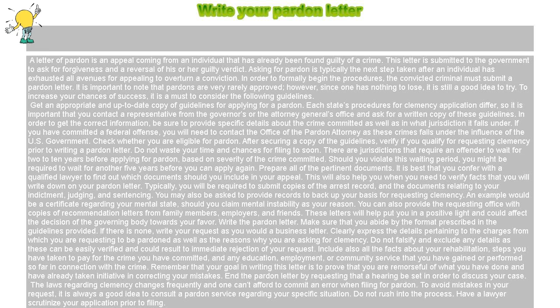Check whether you are eligible for pardon. After securing a copy of the guidelines, verify if you qualify for requesting clemency prior to writing a pardon letter. Do not waste your time and chances by filing too soon. There are jurisdictions that require an offender to wait for 2 to 10 years before applying for pardon, based on the severity of the crime committed. Should you violate this waiting period, you might be required to wait for another 5 years before you can apply again.